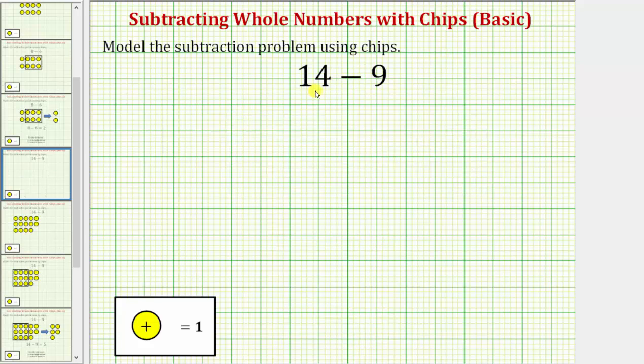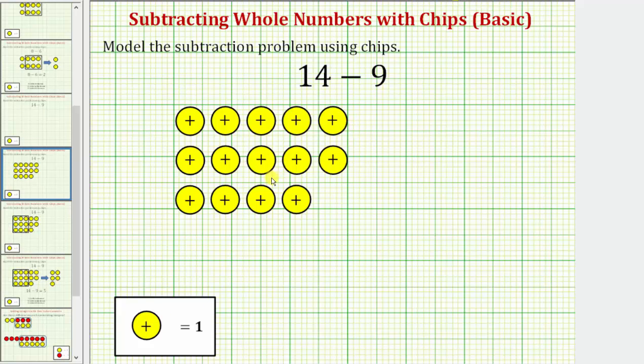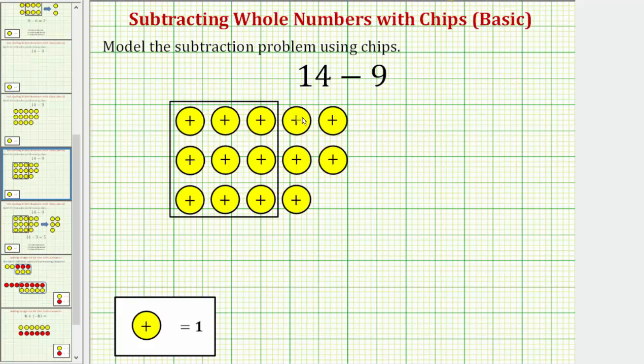Let's look at one more. Here we have 14 minus 9. We begin with 14 positive chips to model 14. Because we have 14 minus 9, we now want to remove or take away 9 of the positive chips.